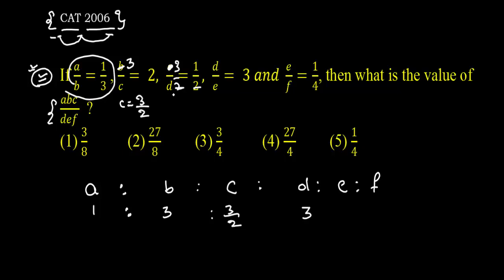So I got D is nothing but 3. I put this value in the next ratio. I put D is equal to 3 and 3, 3 cancel out. I got E is equal to nothing but 1.